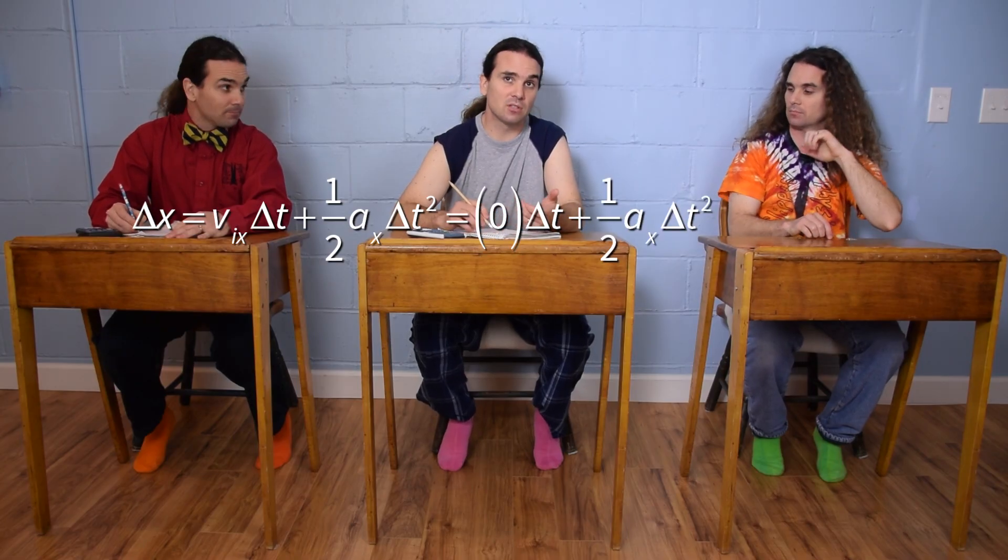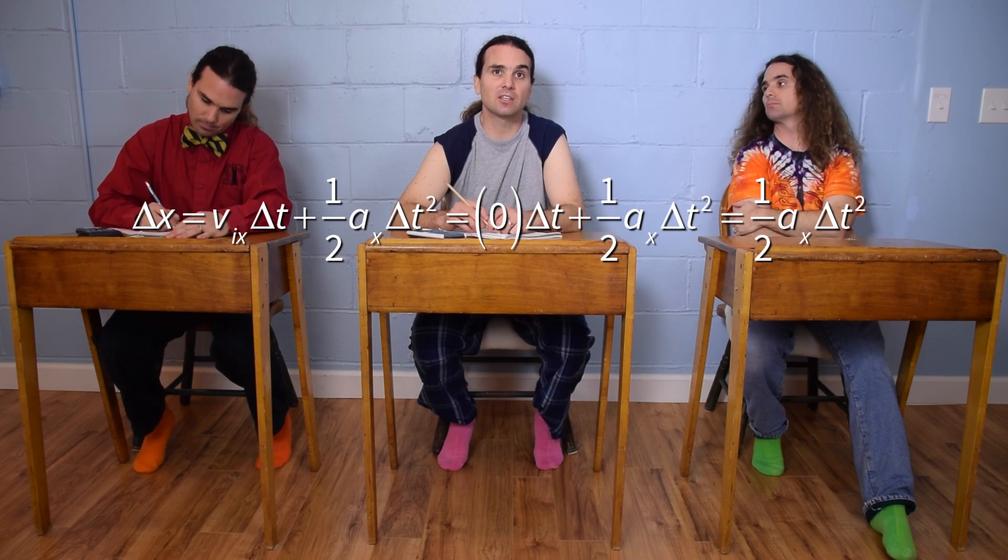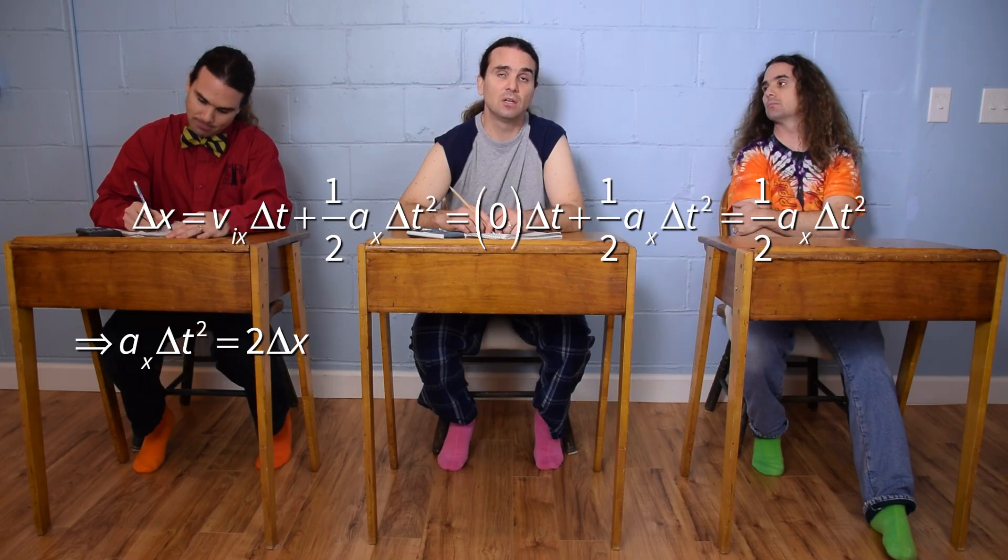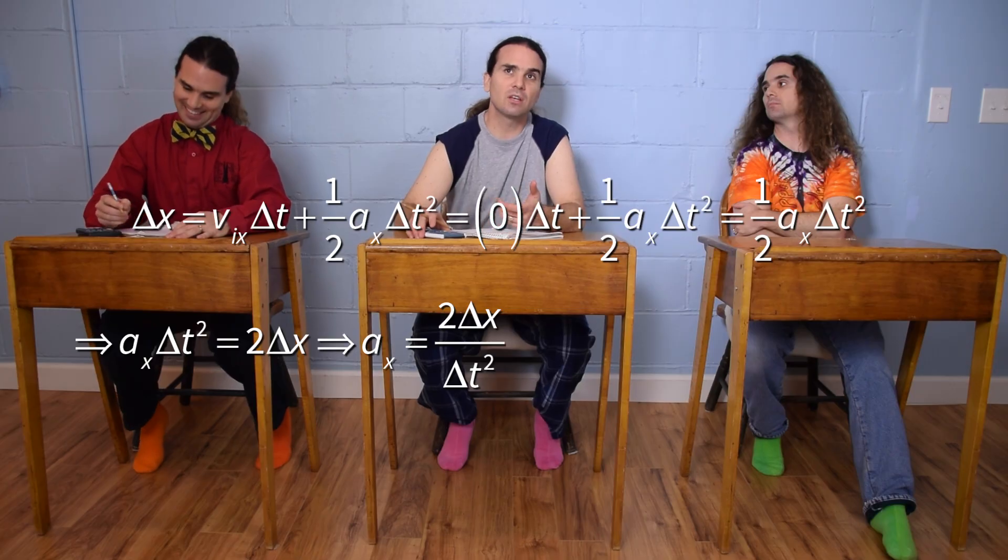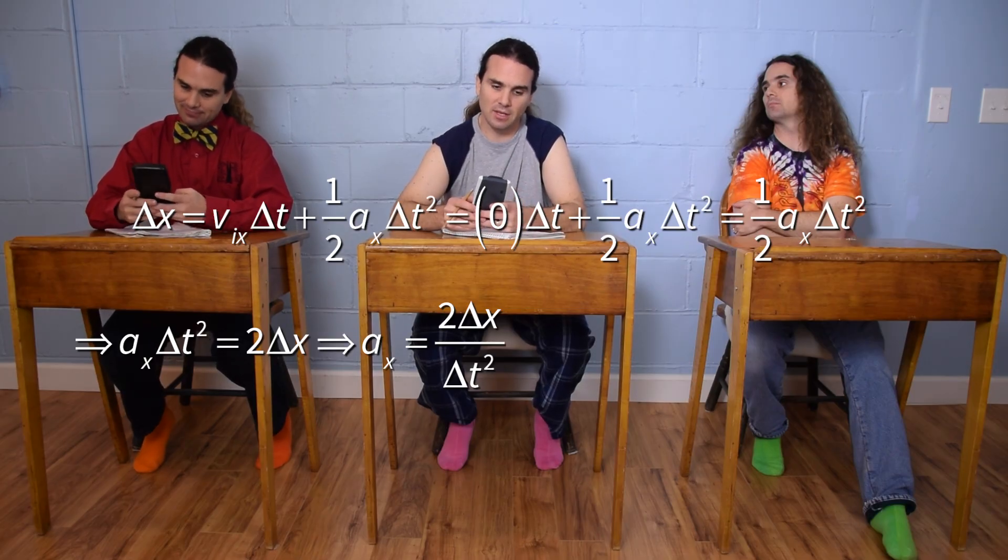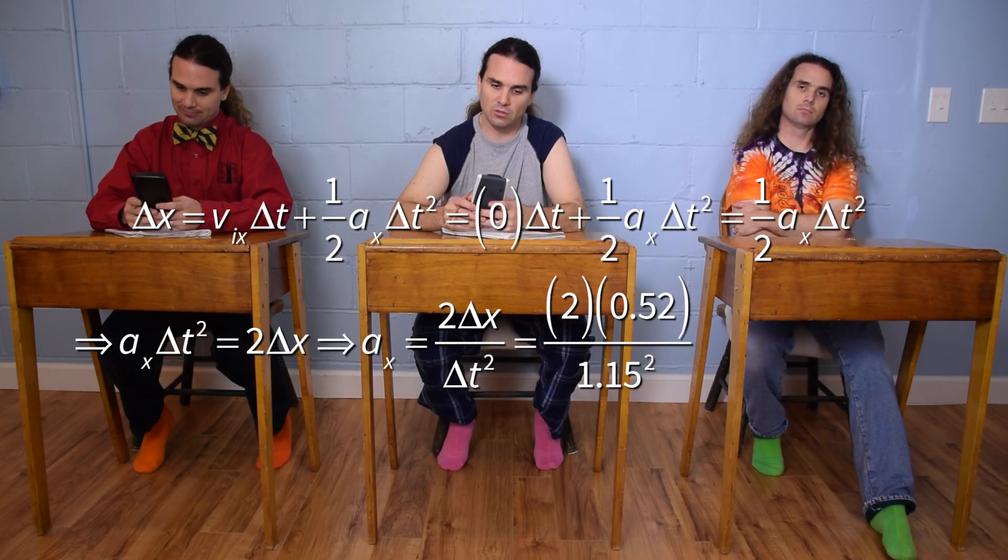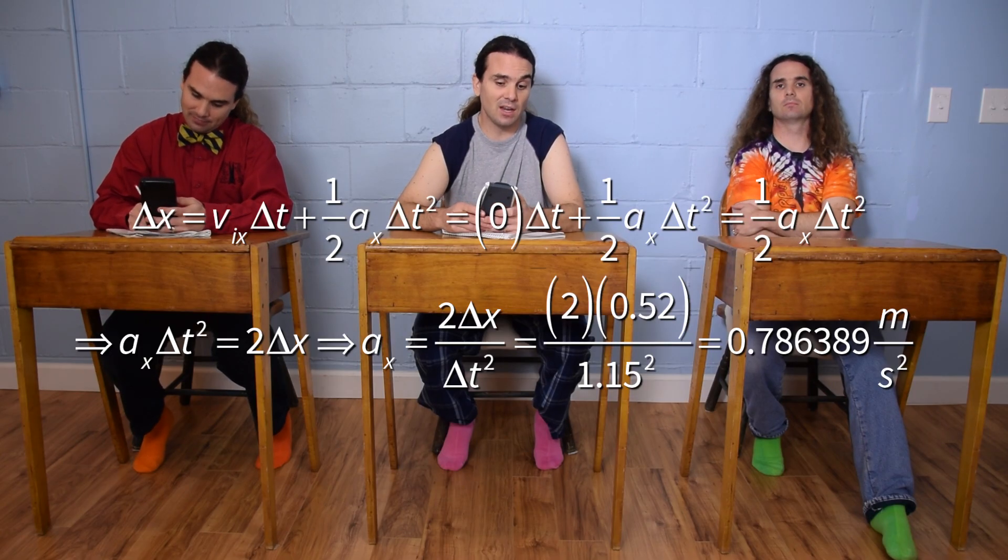Multiply through by two and divide by the change in time squared and you get the acceleration in the x-direction equals two times the displacement all divided by the change in time squared. With numbers, that's 2 times 0.52 divided by 1.15 squared, which is 0.786389 meters per second squared.